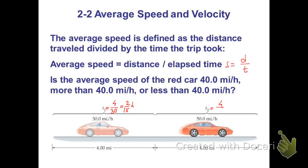And for T2, this is, again, 4 miles divided by 50 miles per hour, it is 2 divided by 25 hours.